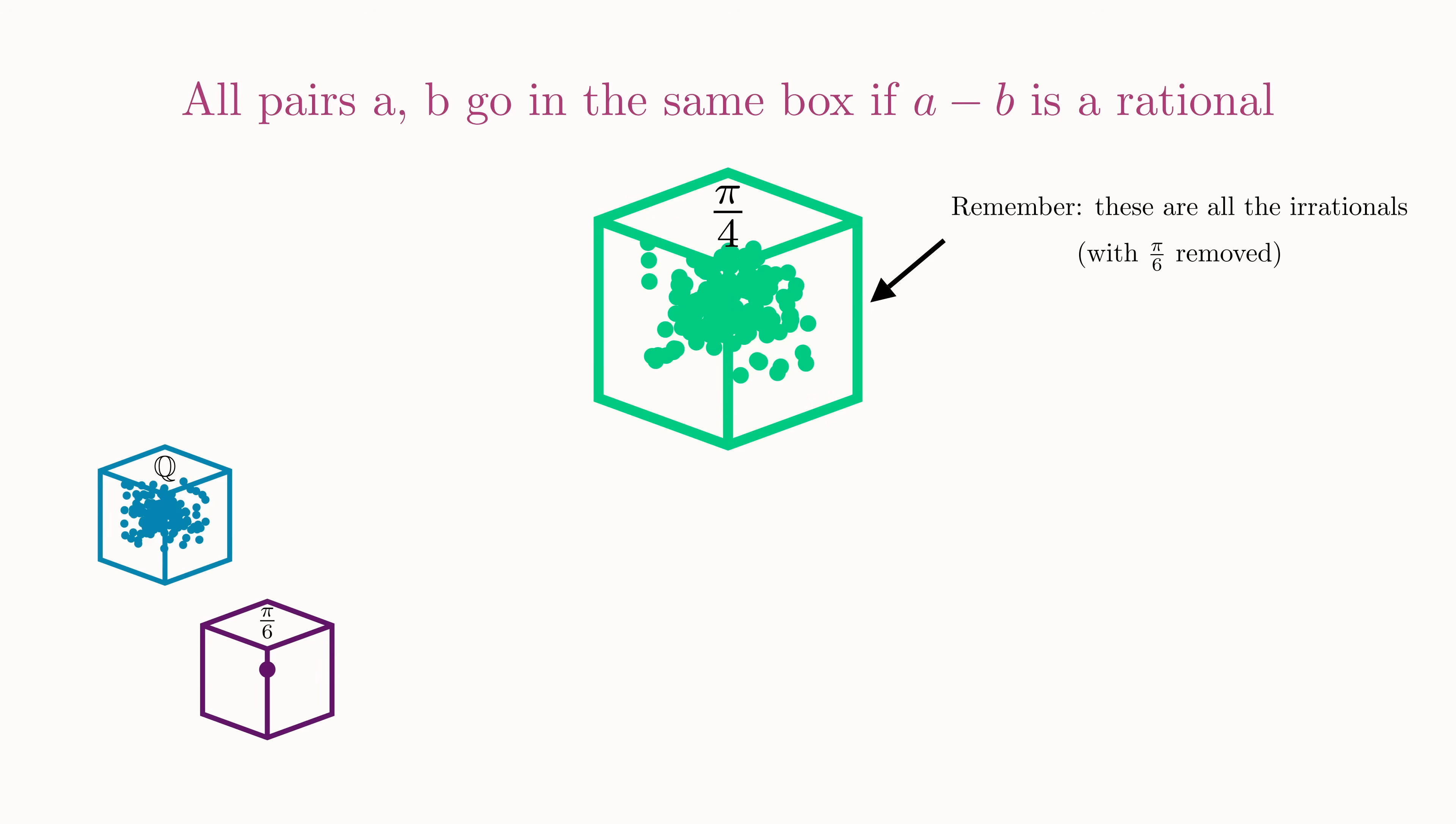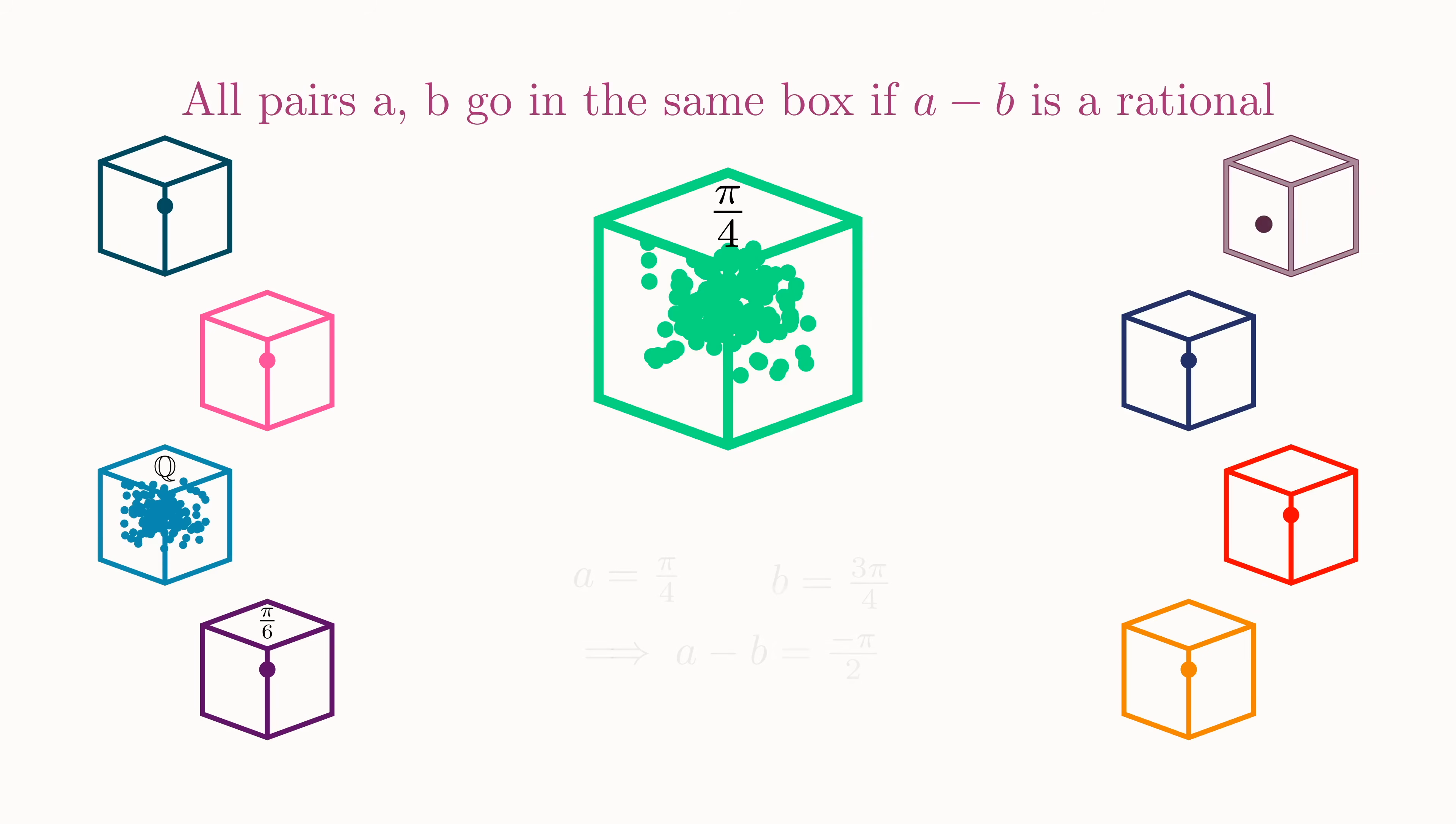We then continue with the same process. We keep picking pairs of points in the green box. If their difference is rational, they go in the same box. If their difference is irrational, they go into different boxes. In fact, every number that is of the form pi over 4 plus some rational will stay in this green box.